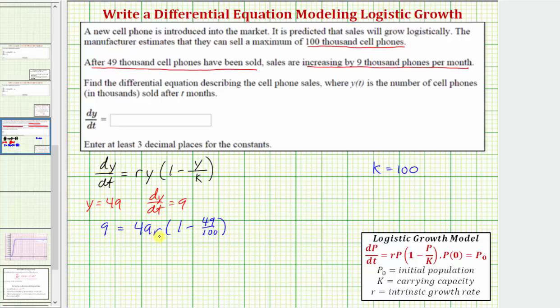Let's divide both sides by 49. That would give us 9 over 49 equals, 1 minus 49 hundredths is 51 hundredths. So we have 51 hundredths r.